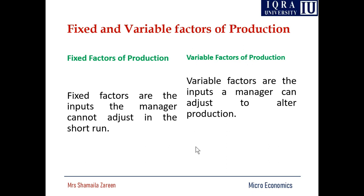There is a long debate about fixed and variable factors of production. In the short run production function, there is a shorter period of time and we can hire only labor, so output will also be low. Fixed factors are inputs the manager cannot adjust in the short run. Variable factors — also referred to as capital — are those factors that can be adjusted and that influence the production function.